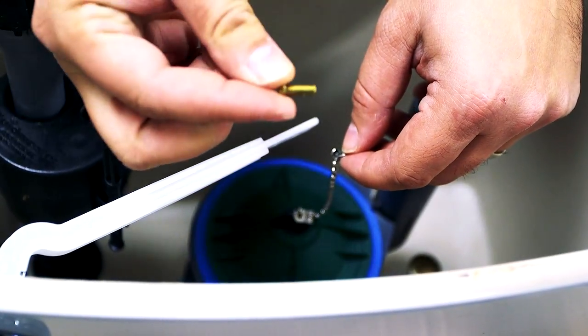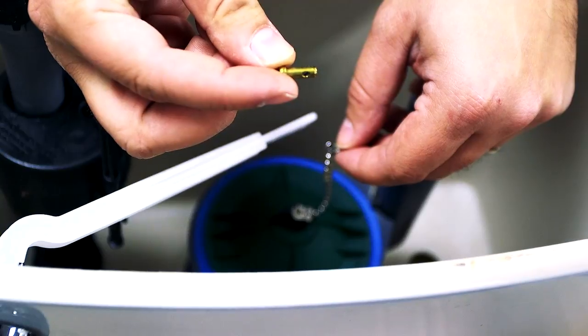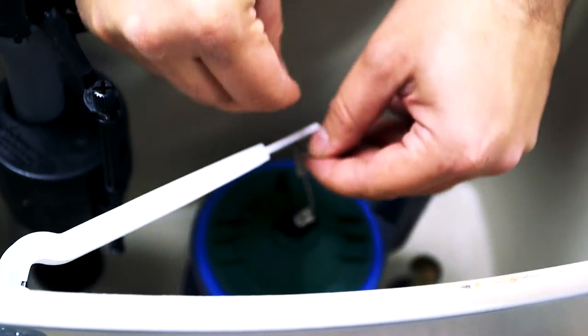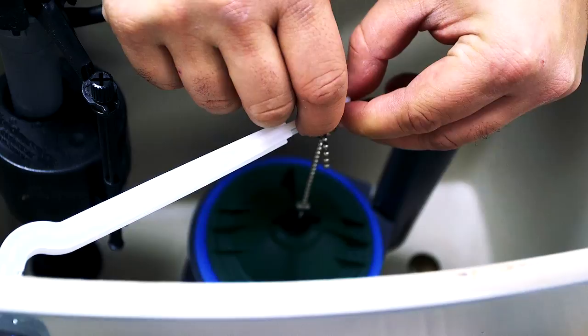Hold the bead chain loop up to the trip lever arm so you can push the clevis pin through the trip lever and bead chain, then secure it with the hairpin.